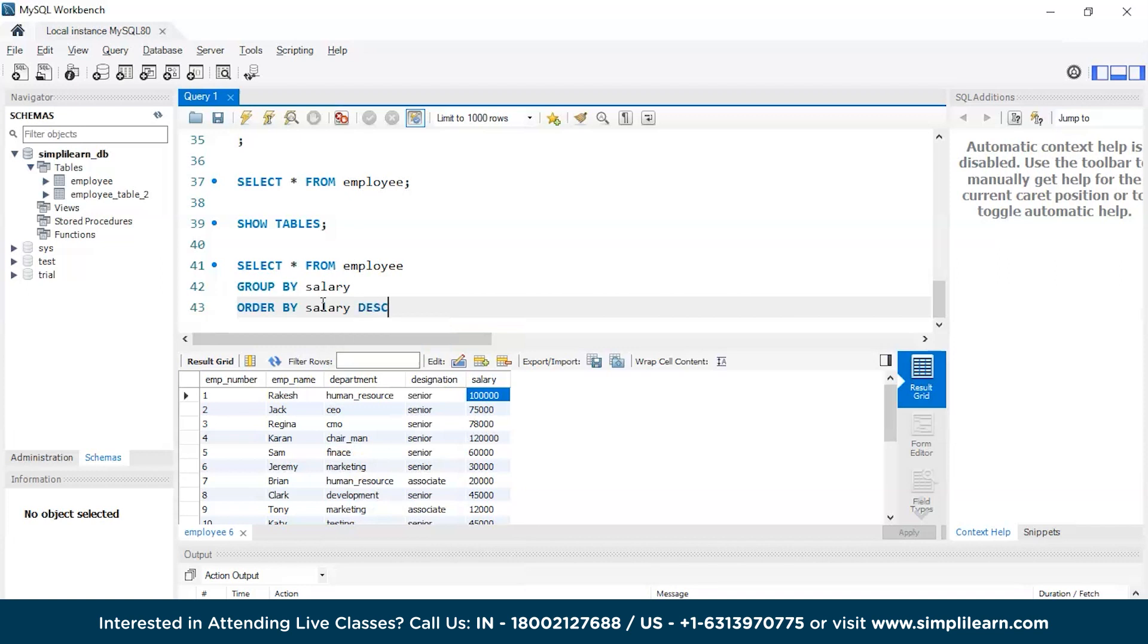Descending order, since we want the highest salary, and the LIMIT N-1, that is 2-1, or you can also write as 1,1. And done. Let's quickly execute this code, and there you go.